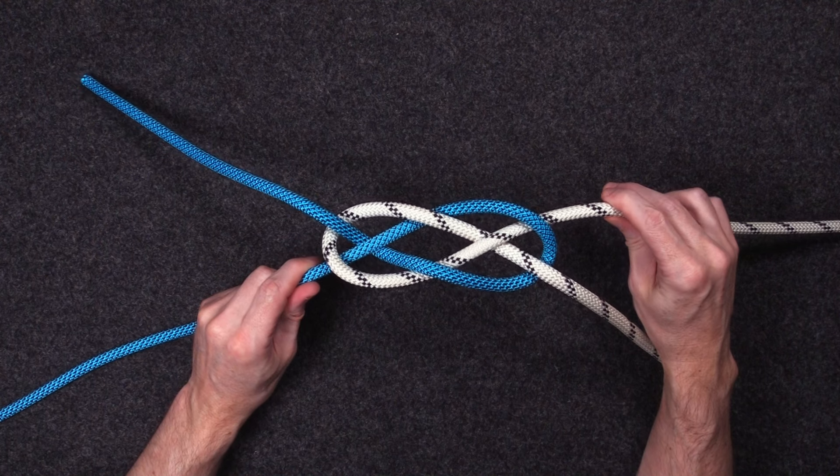Let's have a look at how to join two ropes together securely using the deliberately capsized version of the Carrick Bend.